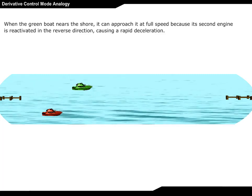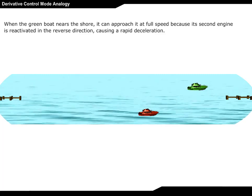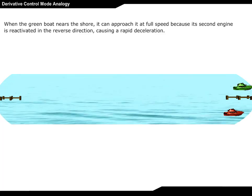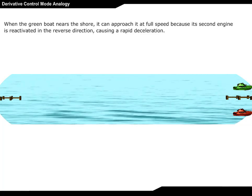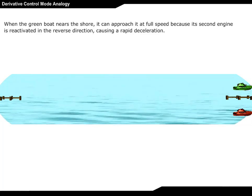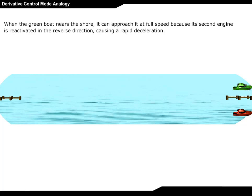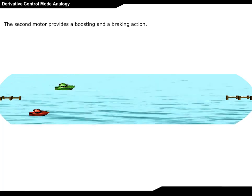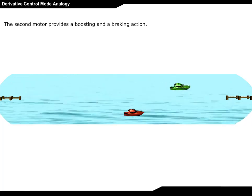When the green boat nears the shore, it can approach it at full speed because its second engine is reactivated in the reverse direction, causing a rapid deceleration. The second motor provides a boosting and a braking action.